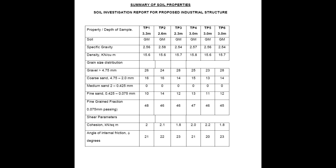Shear parameters: cohesion in kilonewtons per square meter — minimum 1.8, maximum 2.2. Angle of internal friction — minimum 20 degrees, maximum 23 degrees.